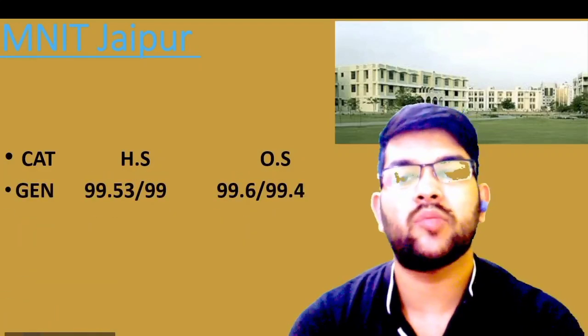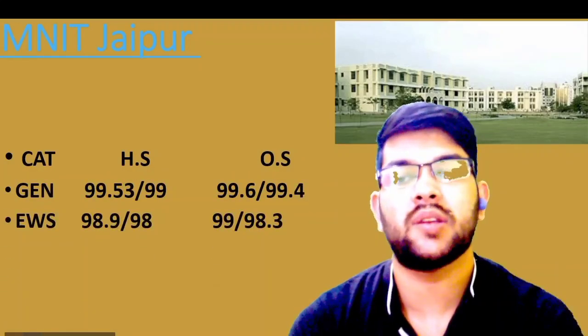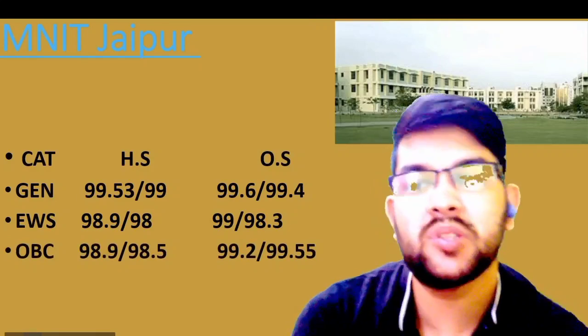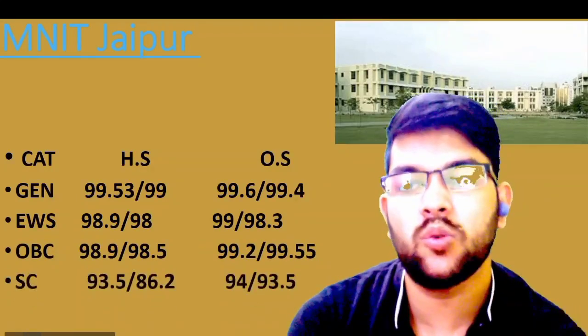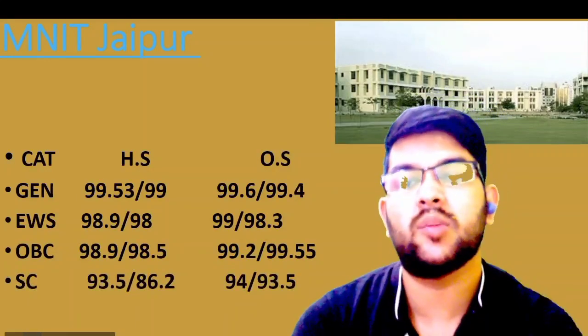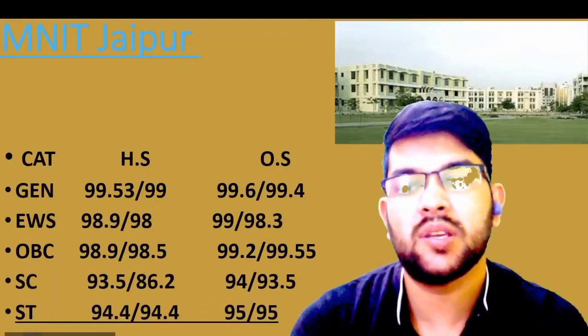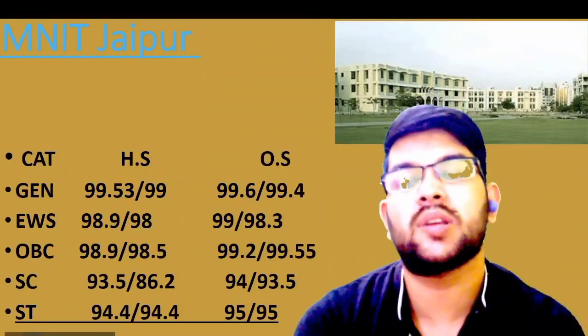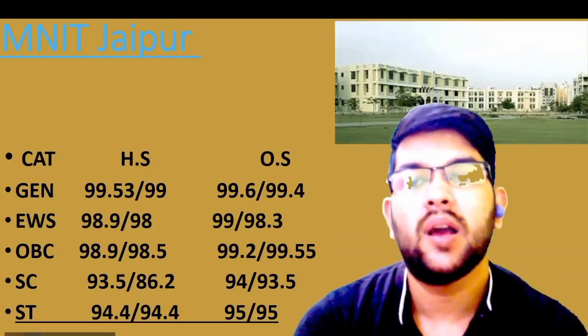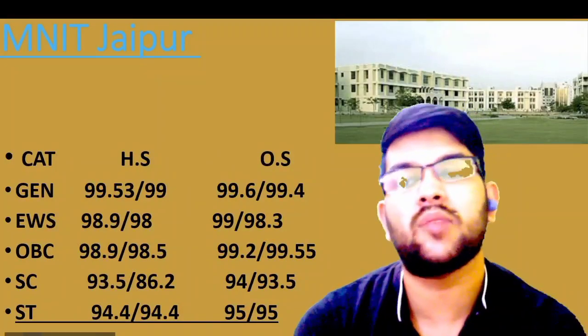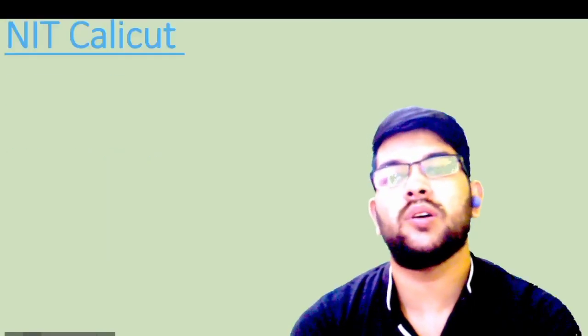Next is MNIT Jaipur. Here is the information. For general category: 99.53 and 99.6. For EWS: 98.9 and 99. For OBC: 98.9 and 99.2. For SC: 93.5 and 94. For ST: 94.4 and 95 percentile — that is for male candidates, home state and other state; for female candidates, check after the slash.